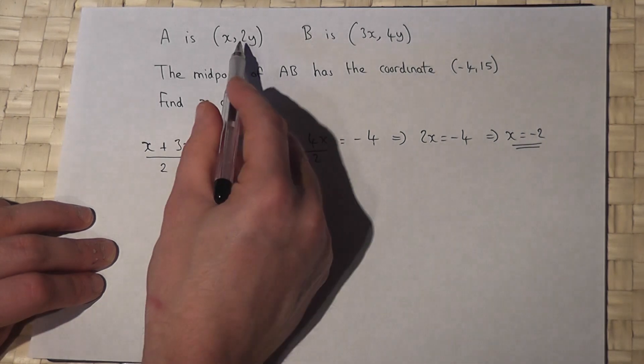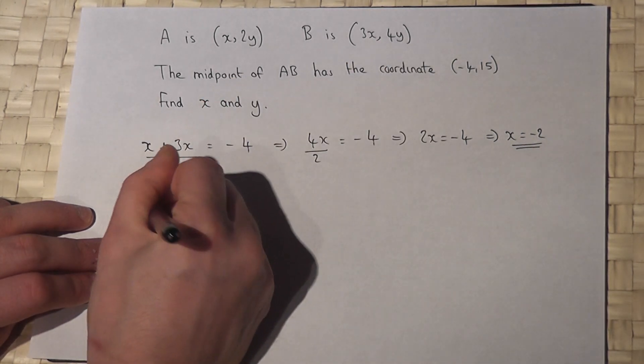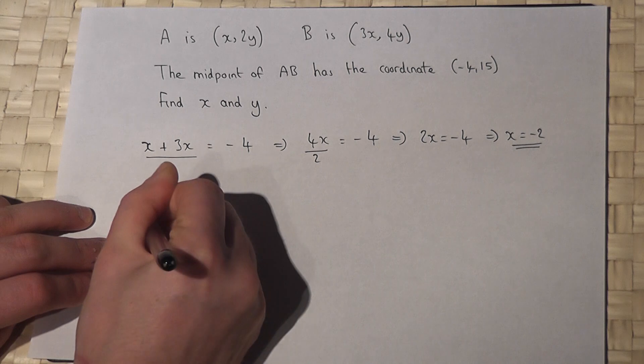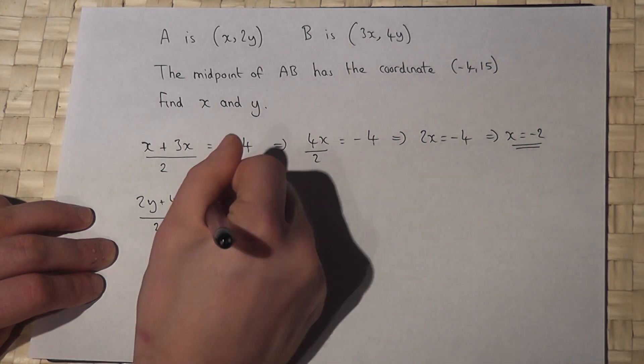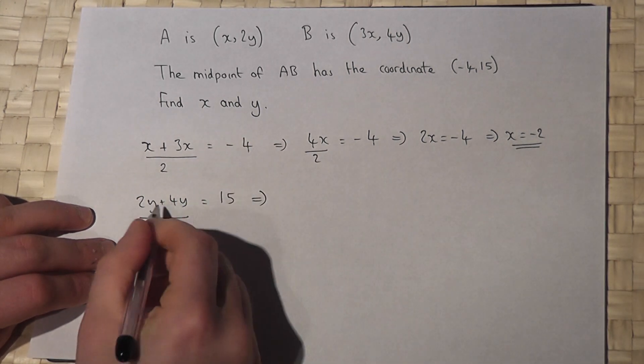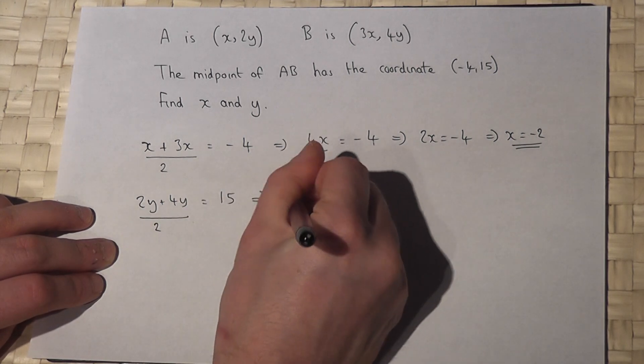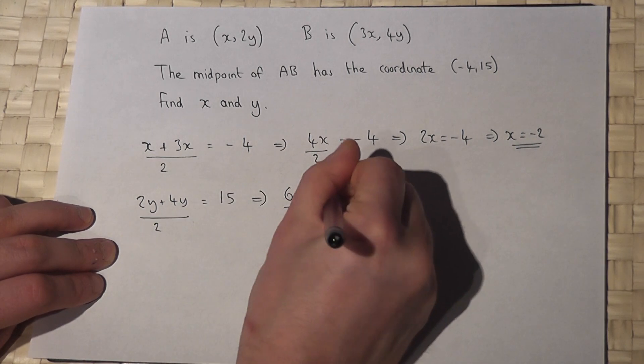We also know that 2y plus 4y over 2 for the midpoint is 15. Now, 2y plus 4y is 6y over 2 equals 15.